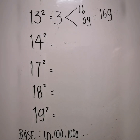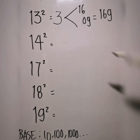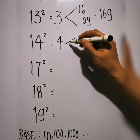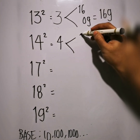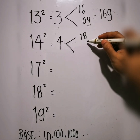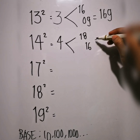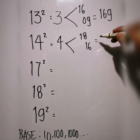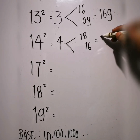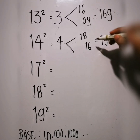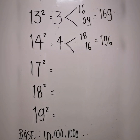Next example, 14 squared. 14 minus 10 is 4. 14 plus 4 is 18. 4 squared is 16. So we carry the 1: 18 plus 1 is 19, giving us 196.